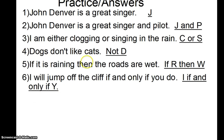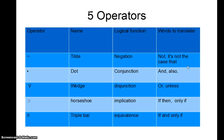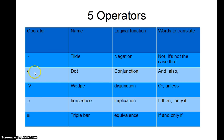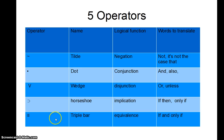Instead of using little words like 'and,' 'or,' and 'not,' we want to symbolize those too — put everything into symbols. So we introduce five operators. The first is the tilde, which represents negation — instead of saying 'not' or 'it's not the case that,' we use a tilde. The dot represents 'and,' called a conjunction. The V (wedge) represents 'or,' called a disjunction. The horseshoe represents if-then sentences, called material implication. In some books it's an arrow. And the triple bar represents equivalence — 'if and only if' statements, sometimes shown as a double-headed arrow.